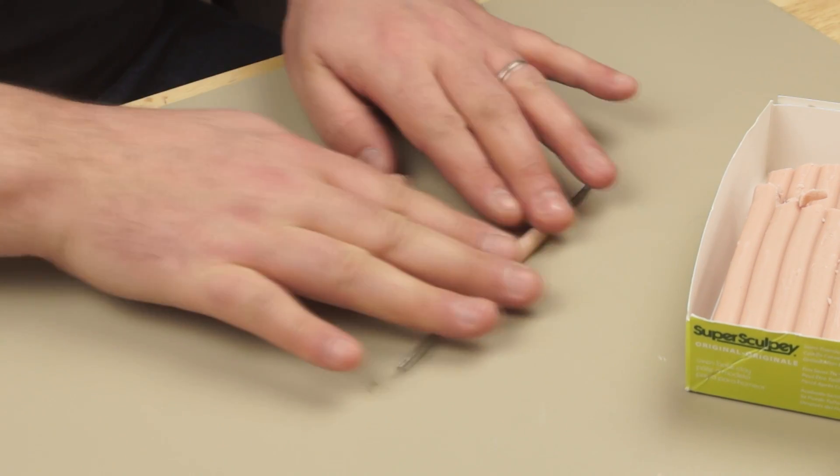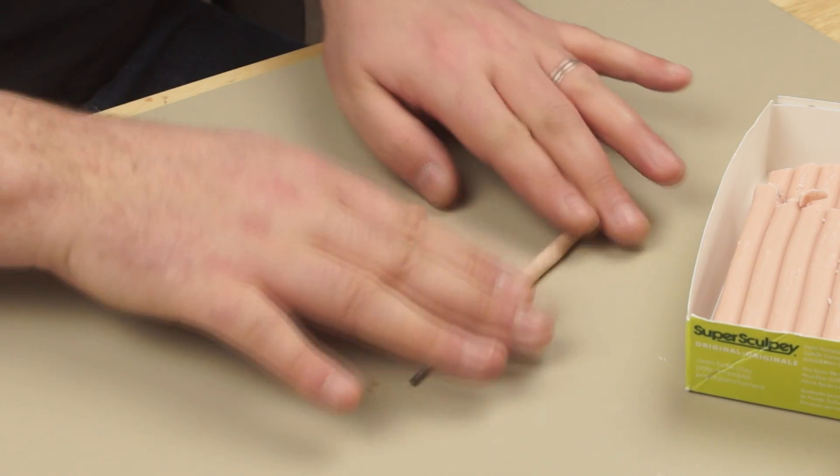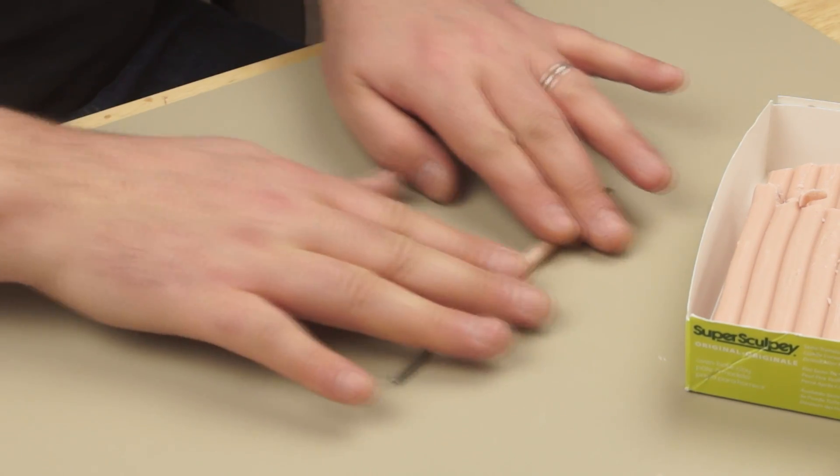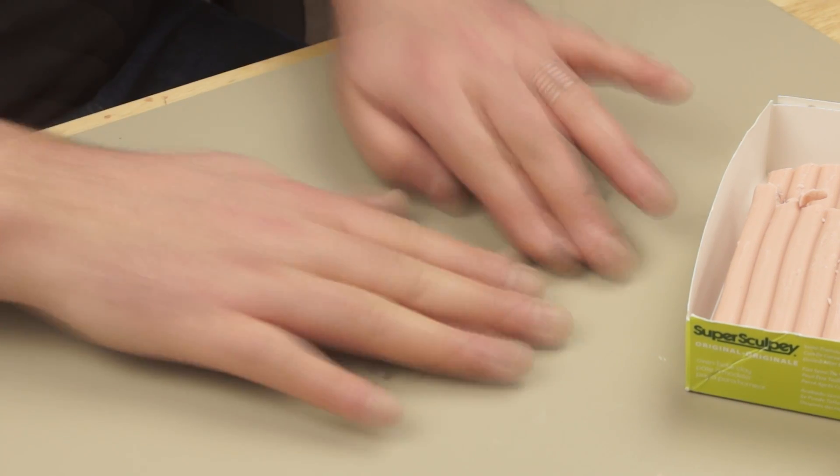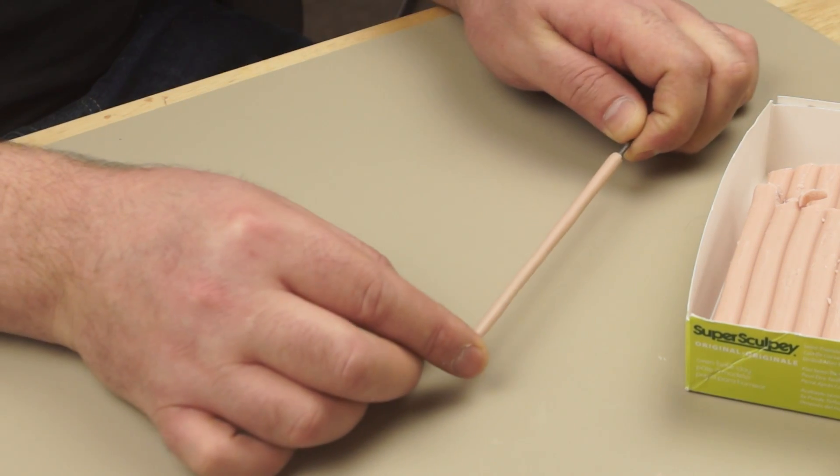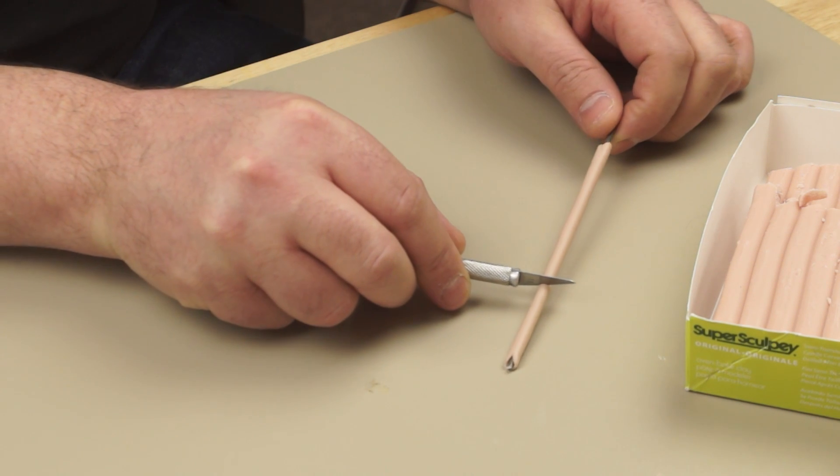The polymer clay doesn't really grip onto the spoke so I'm just going to kind of stretch it along as I do it very gently and that should keep it in contact with the metal. Once I've got it about the right thickness I can use a knife and just trim it to the length that I want.